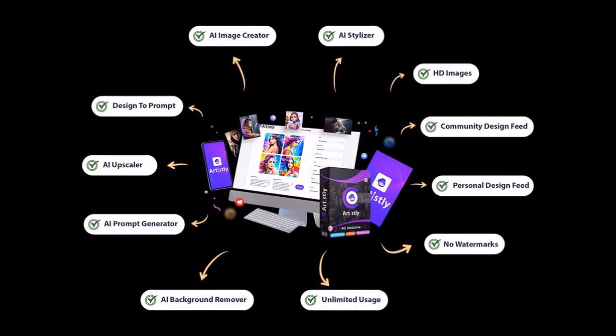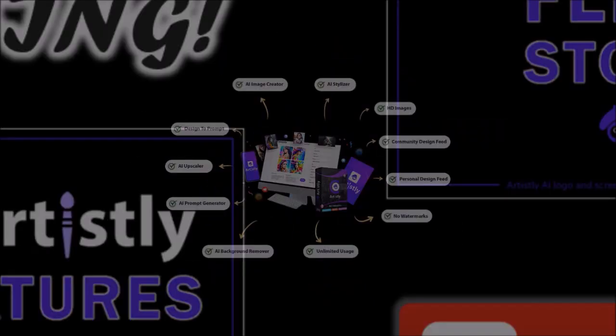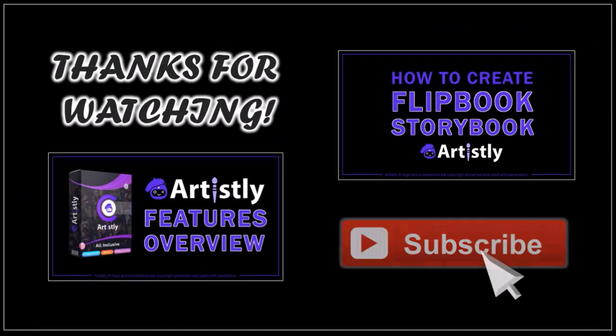Here is another example where I use Mirror Magic to take my own picture and then change it into a cartoon style image. There is so much more you can do with Artistly, and you can check the link in the description section to try it and get a discounted price. I hope you found this tutorial helpful. If you have any questions, please leave them in the comment section. Thanks for watching.